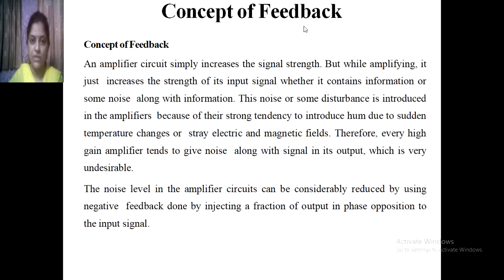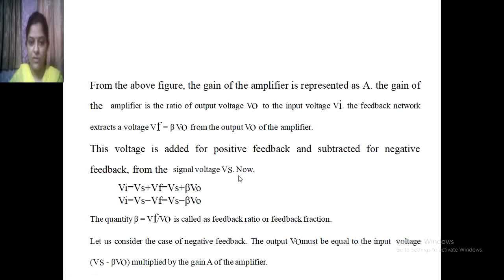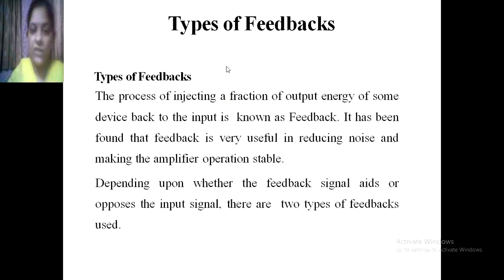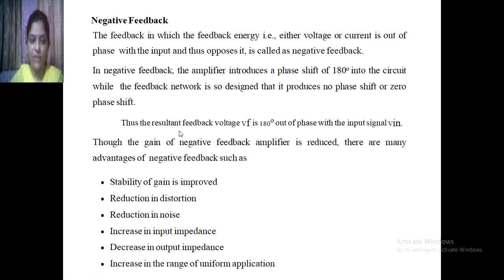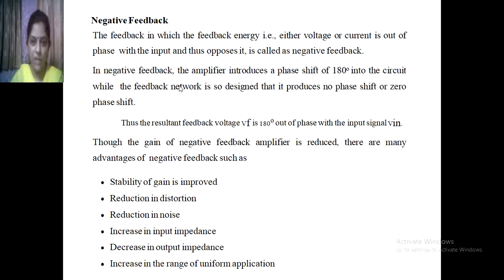We have seen the concept of feedback - what is meant by feedback and why it is necessary. We covered the principle of feedback amplifiers and derived the standard equation to calculate the gain of a feedback amplifier. We also saw the types of feedback: depending on which signal is fed at the input side, there are two types - positive feedback and negative feedback. Positive feedback has disadvantages of increasing distortion and instability.